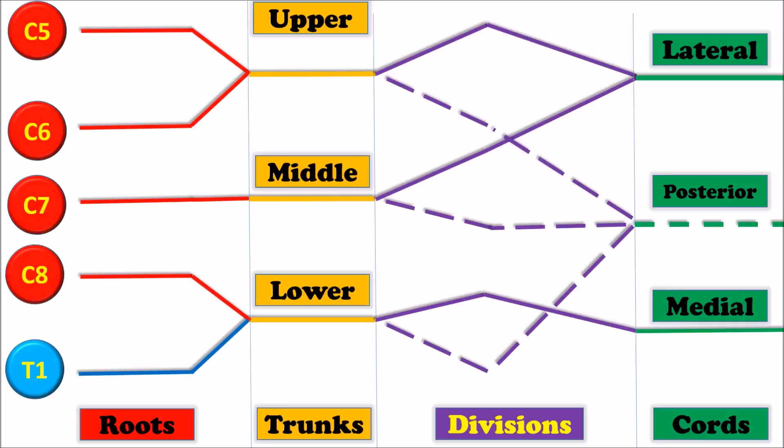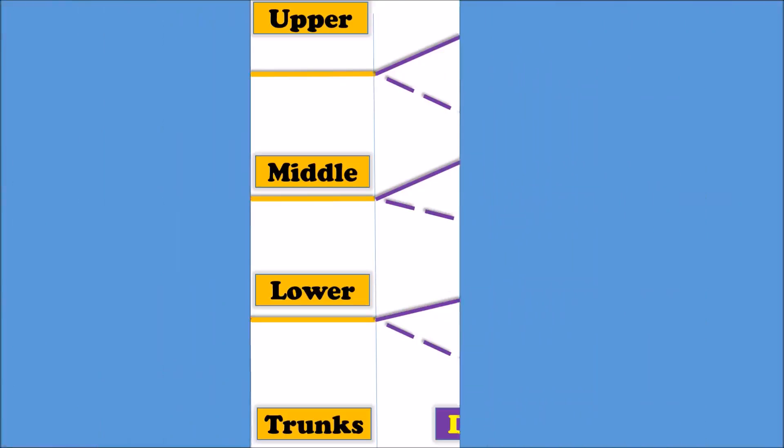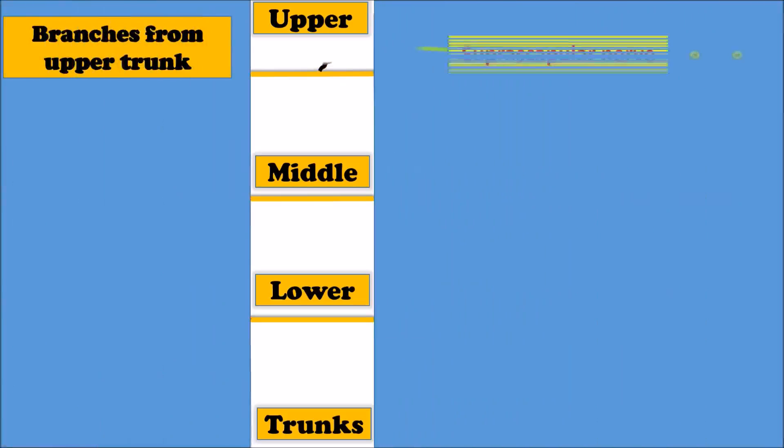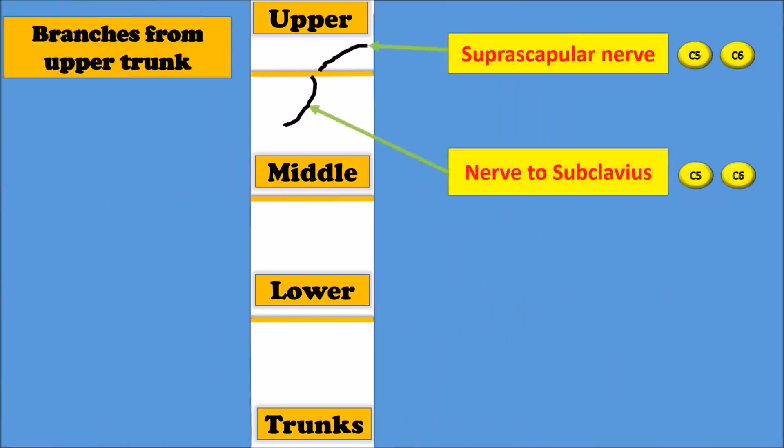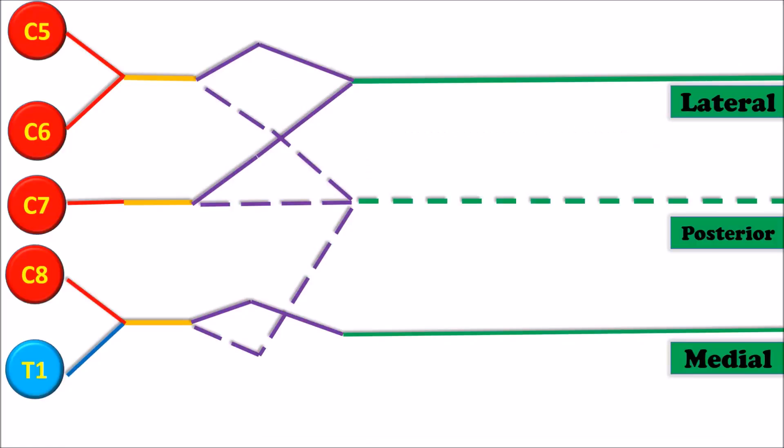Branches of the trunks arise only from the upper trunk. Those are suprascapular nerve and nerve to subclavius. Before discussing the branches of the cords, let us first discuss the root value of the cords.